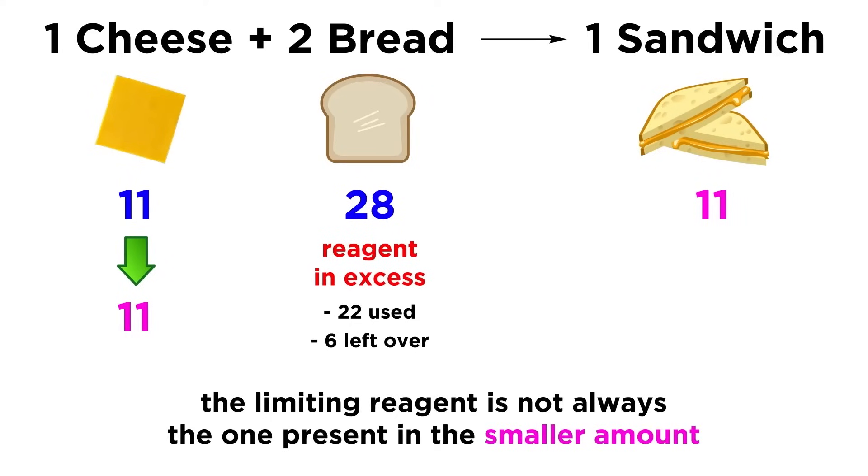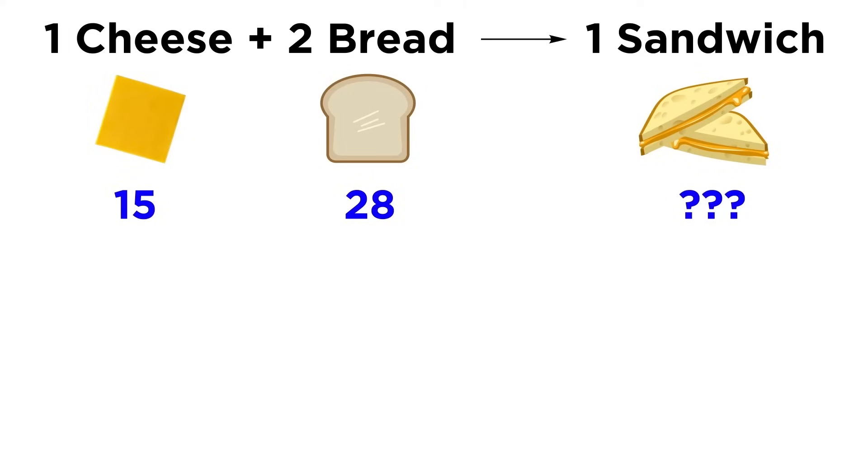Make sure to note that the limiting reagent will not always be the one present in the smaller amount. If we instead had 15 slices of cheese, along with the 28 slices of bread, then all of a sudden bread would become the limiting reagent, since that can only produce 14 sandwiches.